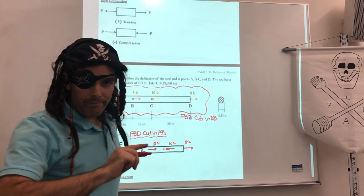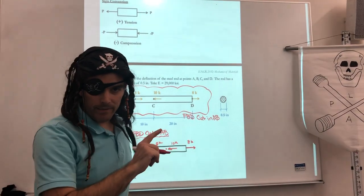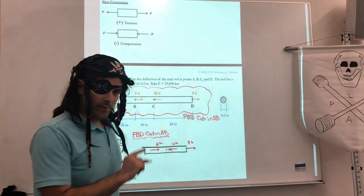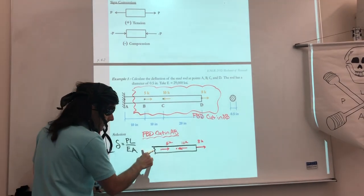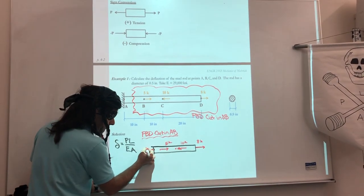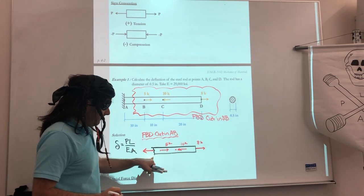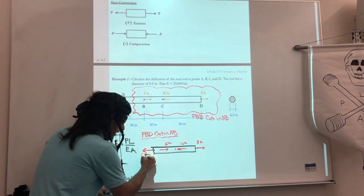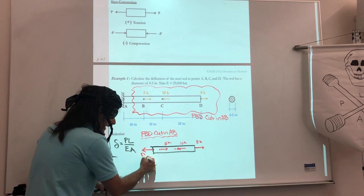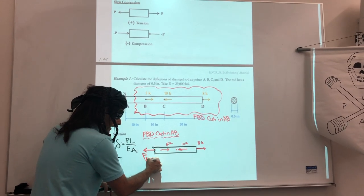And then what do I do at my cut? Well, we said we adopted a sign convention, and tension was positive. So we're going to draw our force in the positive direction. Positive is away from the cut. So I'll insert my force on my cut, and this is going to be my axial force in segment AB.